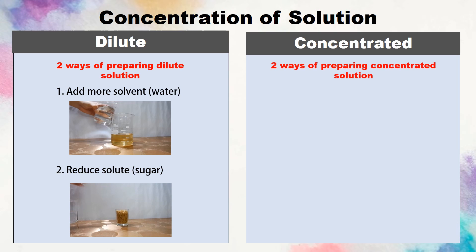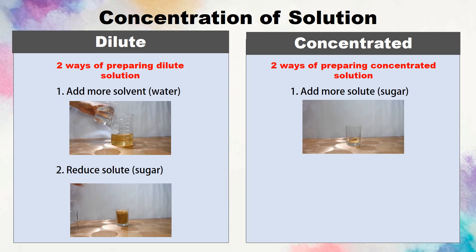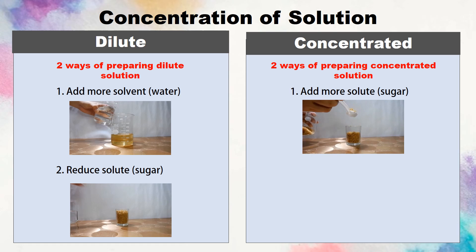Also, there are two ways of preparing concentrated solution, and they are the opposite of dilute solution. Number 1: by adding more solute and keeping the amount of solvent the same. Number 2: by reducing the amount of solvent and keeping the amount of solute the same.